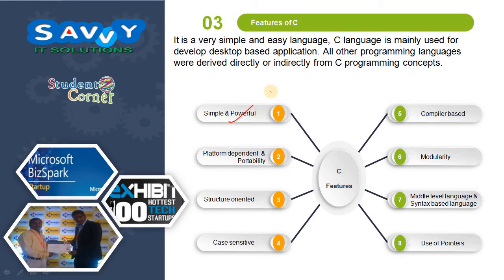The features of C language are: simple and powerful, platform dependent and portability, structure oriented, case sensitive, compile-based, modularity, middle-level language or syntax-based language, and use of pointers.